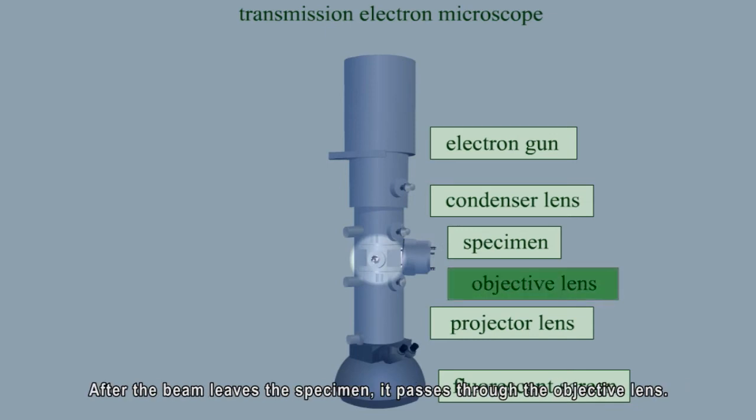After the beam leaves the specimen, it passes through the objective lens. The objective lens performs the bulk of the magnification of the specimen.